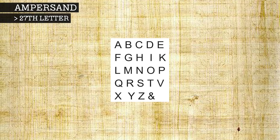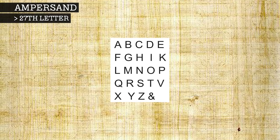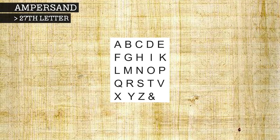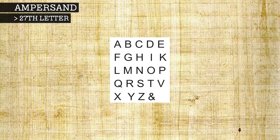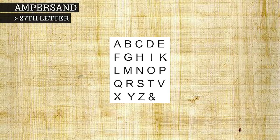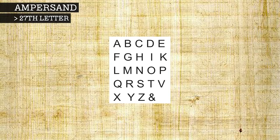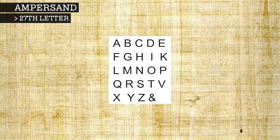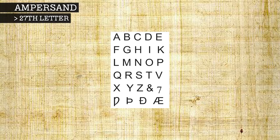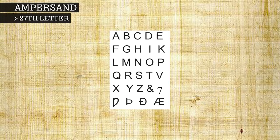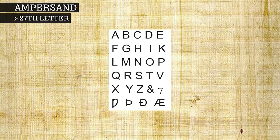The ampersand was part of the original Old English alphabet, which was recorded in 1011 AD, though at the time it was still known as "and." The full Old English alphabet actually contained these 29 characters.